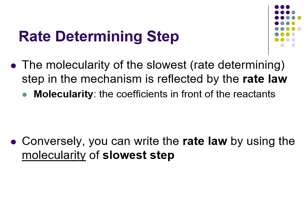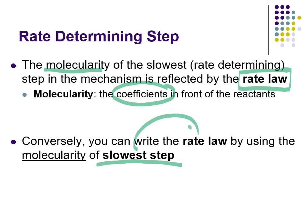The rate-determining step and the molecularity of the slowest step: we're talking about multiple steps happening between the reactants on their way to becoming products, and one of them is the slowest. The molecularity — essentially the coefficients in that equation — are based on the rate law. Conversely, if you already knew what the slowest step was, you could look at its coefficients to derive the rate law. So if you have the rate law, you can determine the slowest step; or if you have the slowest step, you can determine the rate law.